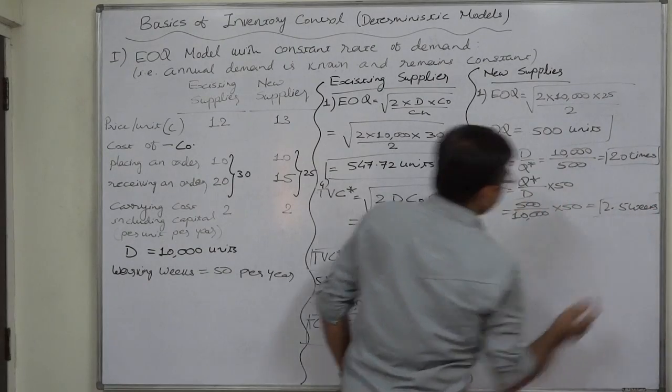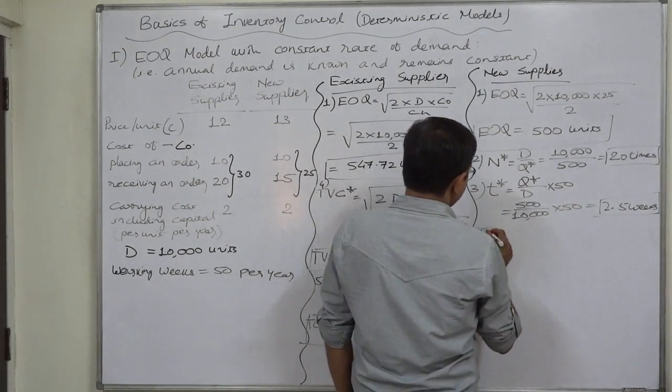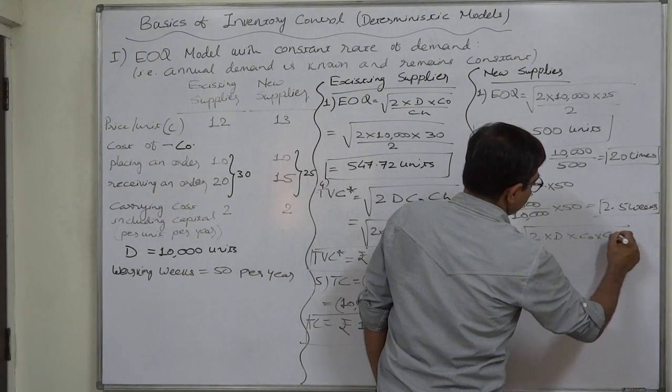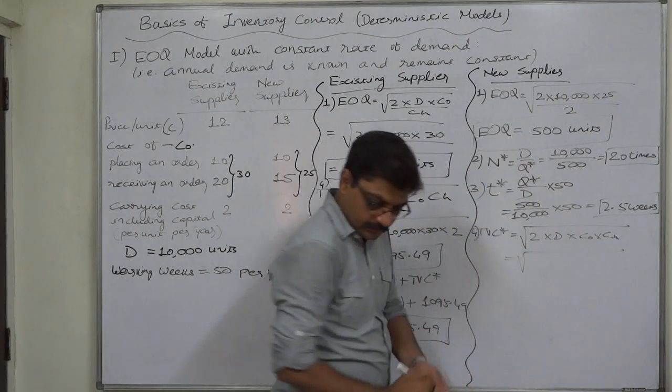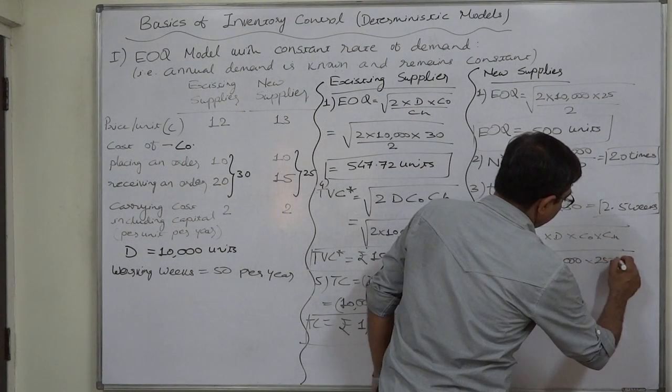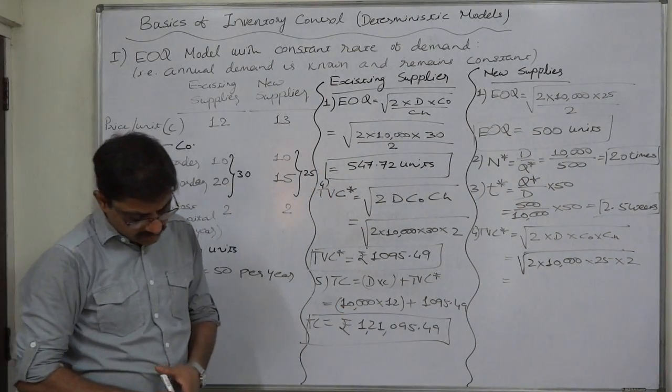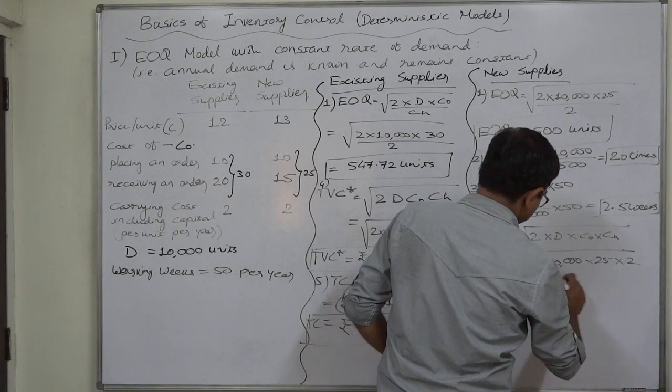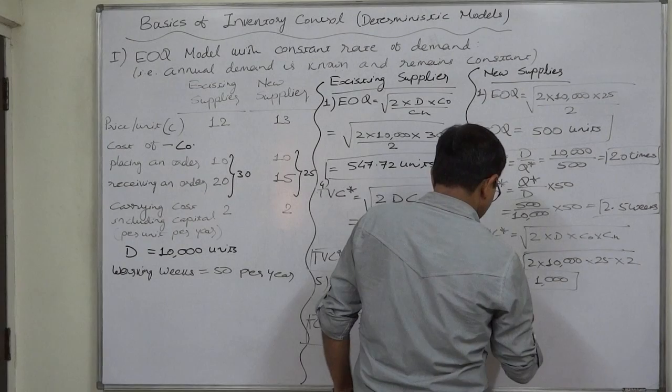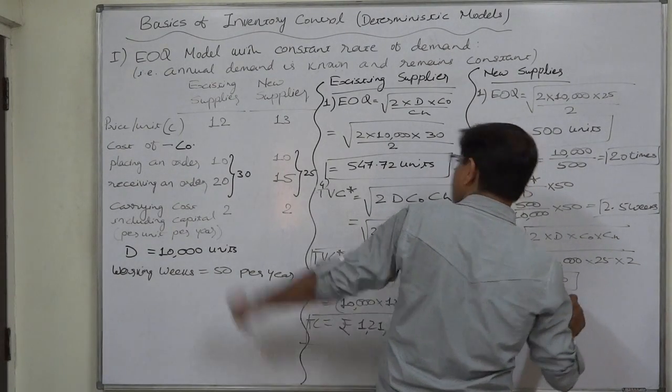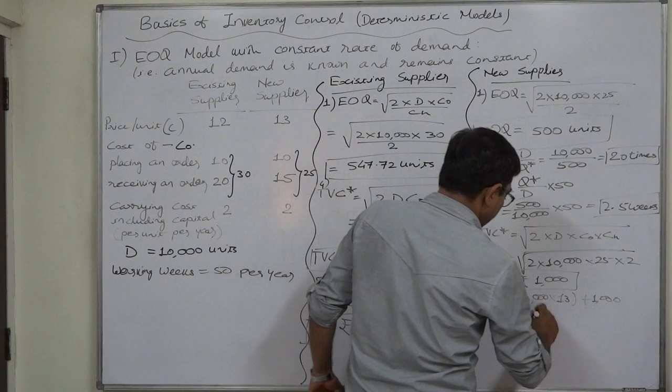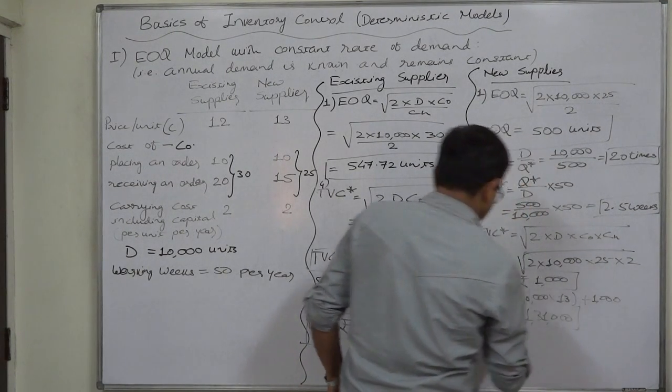Now let us calculate total variable cost: square root of 2 into D into CO into CH. That will be under root 2 multiplied by 10,000 multiplied by 25 multiplied by 2, so it is square root of 1 million, that comes to rupees 1000 exactly. Total variable cost comes to rupees 1000. Let us calculate total cost: that will be D into C, 10,000 units into rupees 13, plus 1000. So it comes to rupees 131,000 or one lakh 31,000.